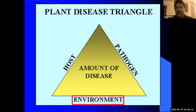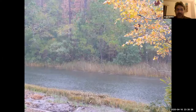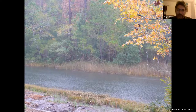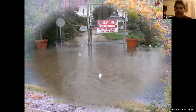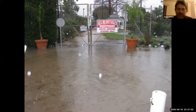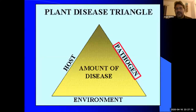The second component is the environment — it either favors the disease, making it problematic, or favors the host's immune system so it can defend itself. We have no control over the environment: a lot of rain stresses plants making them susceptible, flooding, too cold, too hot — all environmental factors are out of our control. We can control the plant side through resistant varieties.